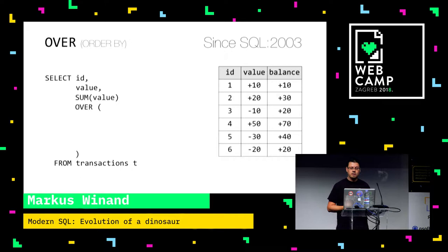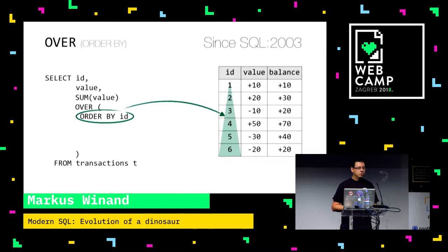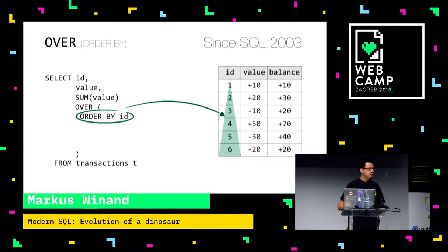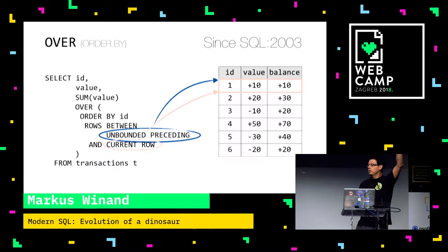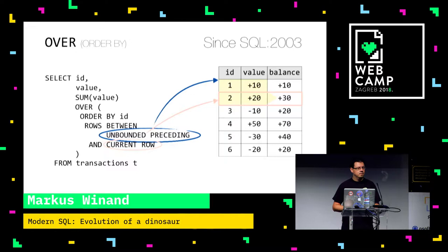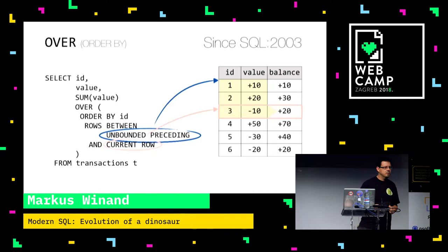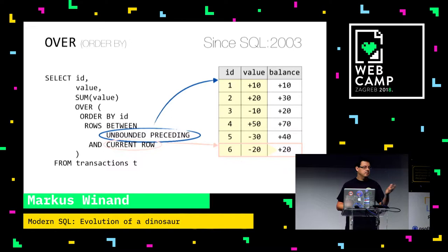So we start with SUM OVER, and then we put in an ORDER BY for the sole purpose to tell the database: I'm going to tell you a story about something that happened before and something that happened after, and whenever I refer to before and after, this is the order I mean. Once I have ordered it, I can say: only aggregate the rows between UNBOUNDED PRECEDING — all the rows upstream — and CURRENT ROW. When the database calculates the first result, UNBOUNDED PRECEDING and CURRENT ROW are both the same. But when it goes to the second one, UNBOUNDED PRECEDING is still the top, but CURRENT ROW is the next one. This is what we call a frame — a data frame — which we aggregate upon. This is how you do the running total nowadays.